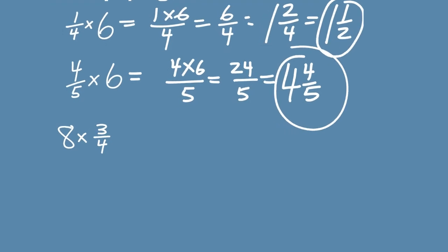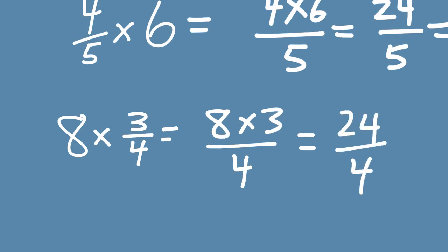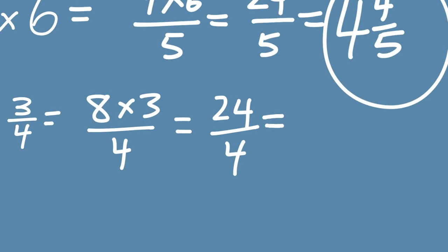And last, but not least, 8 times 3 fourths. Whole number times numerator all over denominator. 3 times 8 is 24. All over 4. Improper. And we know that cleans up to a nice whole number 6. And we are done.